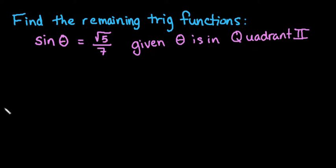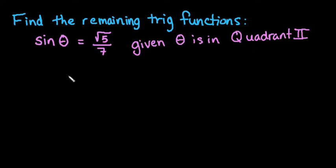For this video, what I want to do is show you how to find the remaining trig functions when you are given one trig function and either the quadrant that it is located in or the sign of another trig function. This is a really important process in a trigonometry class, so let's get started. The first one we have is sine of theta is equal to the square root of 5 divided by 7, given that theta is in quadrant 2.